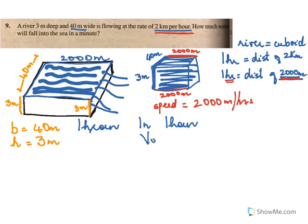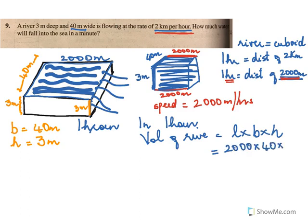The volume of the river for 1 hour equals length × breadth × height, which is 2,000 × 40 × 3. That is the volume for 1 hour — that much water is going to flow into the sea.